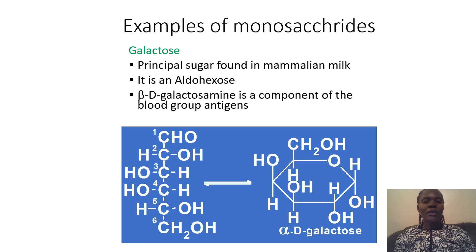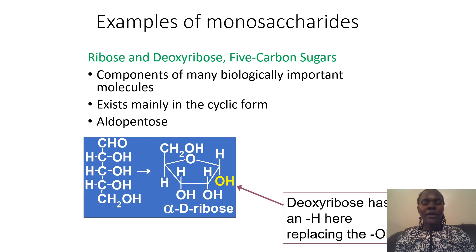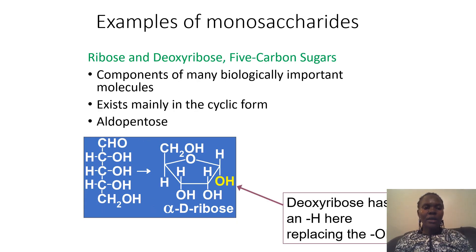Galactose, also known as milk sugar, is another aldo hexose. These are examples of the monosaccharides.